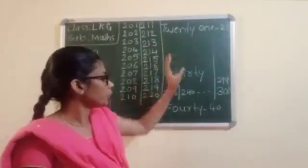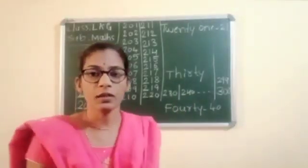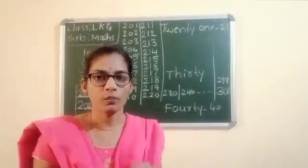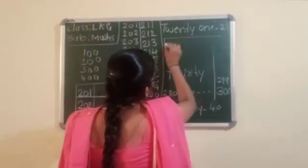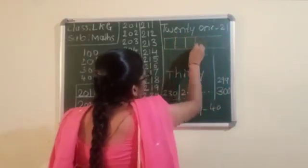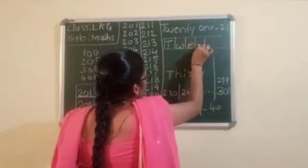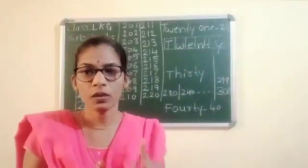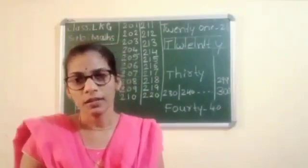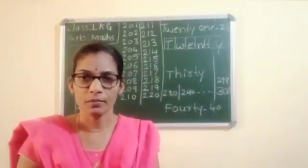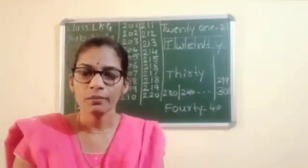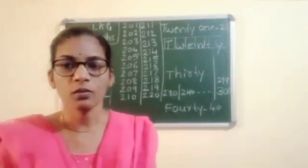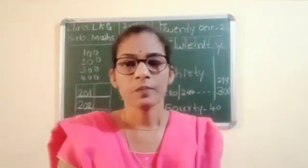Okay, write 21 to 40 number names. Must and should write neatly — one box for one letter. Write in your square line notebook, only one letter for only one box. Look at here: T, W, E, N, T, Y — one letter per box. Write neatly and take a photocopy and send to my number. Children, this is homework: 21 to 40 number names, and 201 to 300 numbers. Write neatly. Okay children, today's class is completed. Next class I will tell you the next chapter. Thank you.